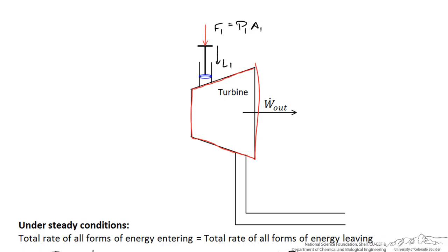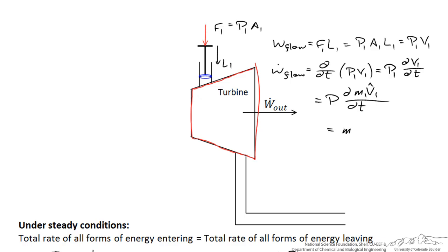Over a period of time this plunger is displaced a distance L1, and I can define the amount of flow work W_flow as equal to the force times the length F1 L1. You can show that this equals P1 times the displaced volume. The rate at which flow work enters the system, W_flow dot, equals the derivative d/dt of P1 V1. If the pressure is constant that's equal to P1 dV1/dt, or I can say P1 d(M V1 hat)/dt. Since V1 hat, the specific volume at state 1, is constant, I'll end up with M dot times P1 V1 hat. This is the rate at which flow work or PV work enters the system.